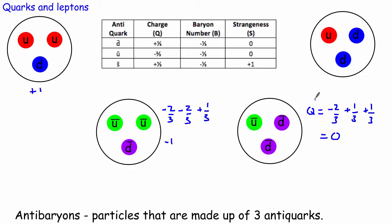In terms of baryon numbers: the proton and neutron both had baryon numbers of plus one. Because we swapped the baryon numbers from positive to negative for anti-quarks, the anti-proton will have a baryon number of minus one, and the anti-neutron will also have a baryon number of minus one. So normal quarks make up protons and neutrons, and anti-quarks make up anti-protons and anti-neutrons.